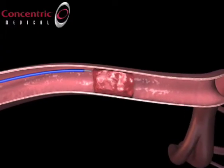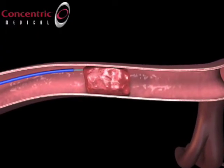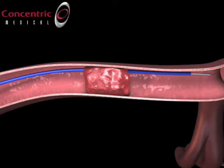Once the system has reached the proximal face of the clot, use standard technique to cross the clot with the guide wire and Mercy Microcatheter. Once the wire and microcatheter have crossed the clot, exchange the guide wire for your choice of Mercy Retriever.